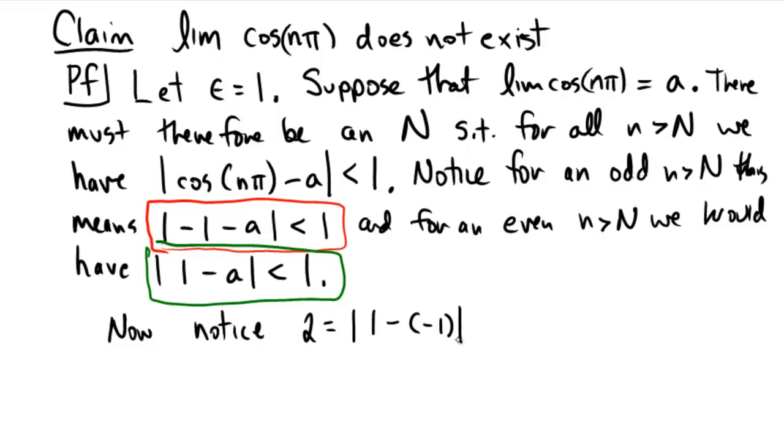Alright, agreed? Then, this is the same as absolute value of 1 minus a, so I'm subtracting an a, then I'm going to add an a, and then I'm going to minus the negative 1. So in other words, I subtracted a and I added a, so I didn't change anything.